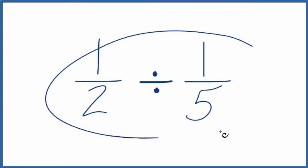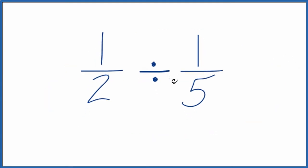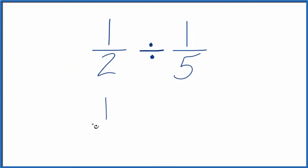Let's divide 1 half by 1 fifth and we'll look at two ways to do this. The first way is we can say 1 half, instead of division, we can multiply by the reciprocal.